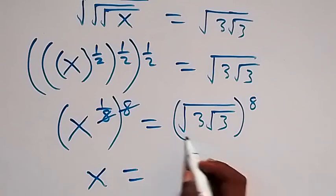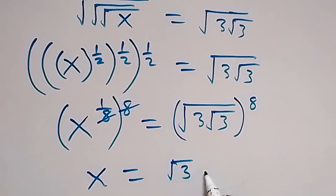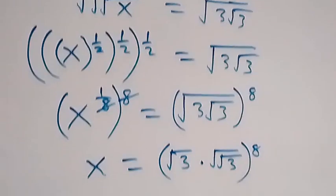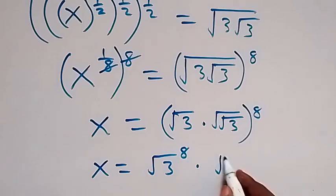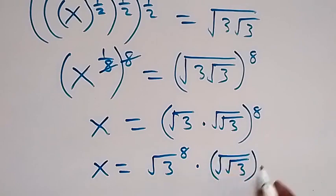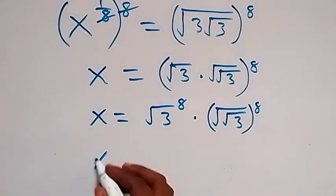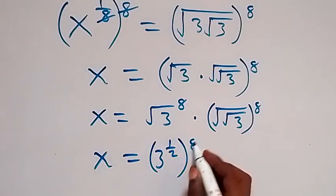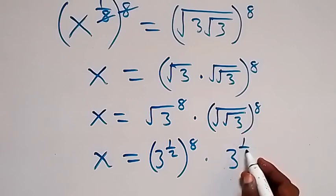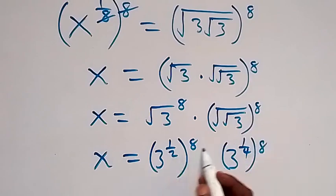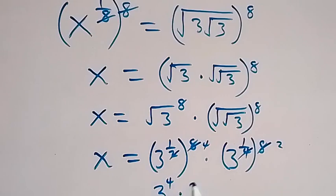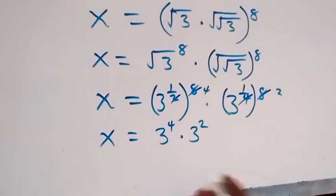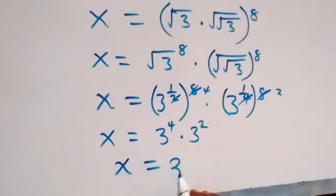x equals root 3 times root 3 raised to power 8. That is x equals root 3 raised to power 8 times root 3 raised to power 8. Since square root is the same as raised to power one-half, we have x equals 3 raised to power one-half, then raised to power 8, times 3 raised to power 1 over 4 raised to power 8. Multiplying powers gives 3 raised to power 4 times 3 raised to power 2. By the law of indices, we add the powers, and x equals 3 raised to power 6.